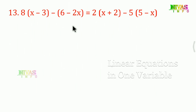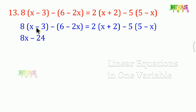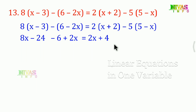Next question 8: we have two brackets on each side. Left side: 8 into 2x is 8x, 8 into 3 is 24, negative, so 8x minus 24. Next bracket: negative 6 plus 2x — 2 into x is 2x, giving 2x plus 4. Right side: negative 5 — 5 into 5 is 25, negative and positive so negative 25. And 5 into 2x is 5x, negative. So we have constants and variables on both sides.